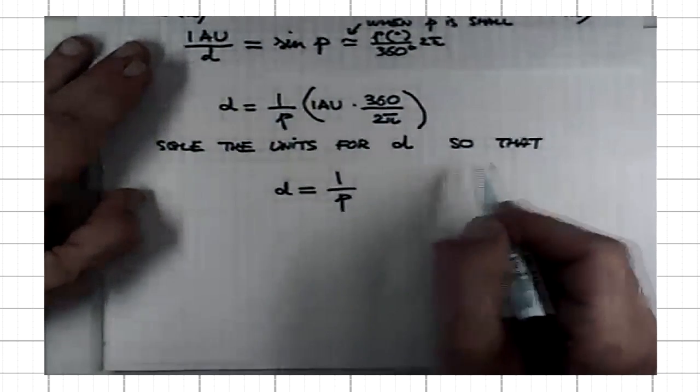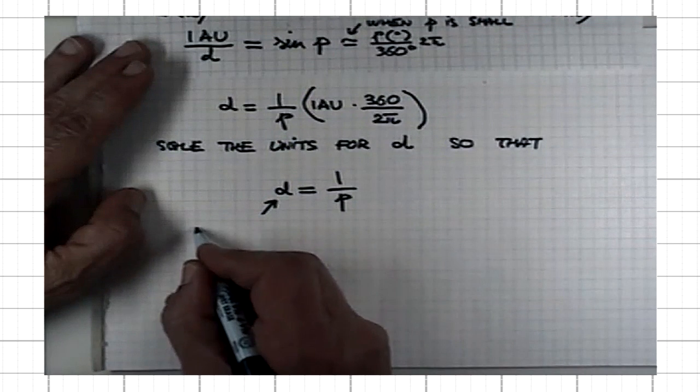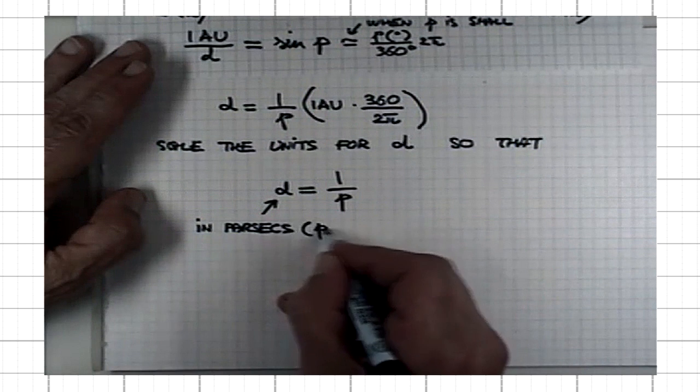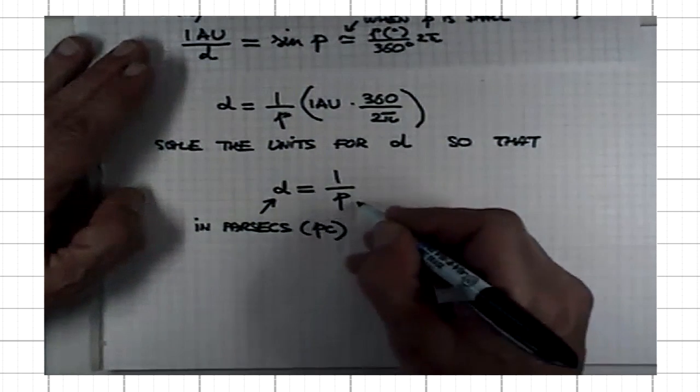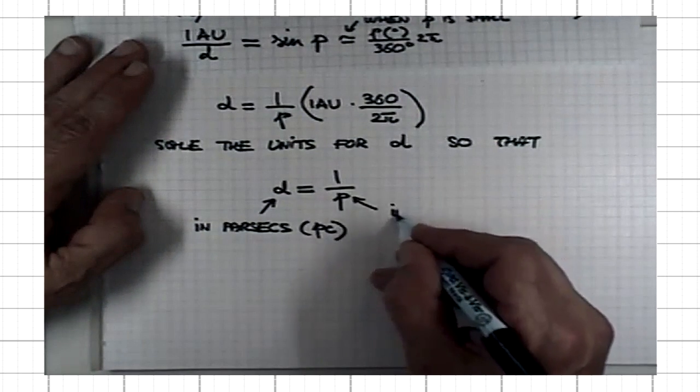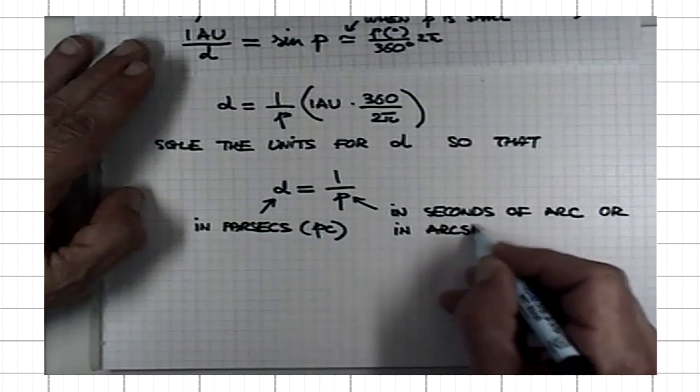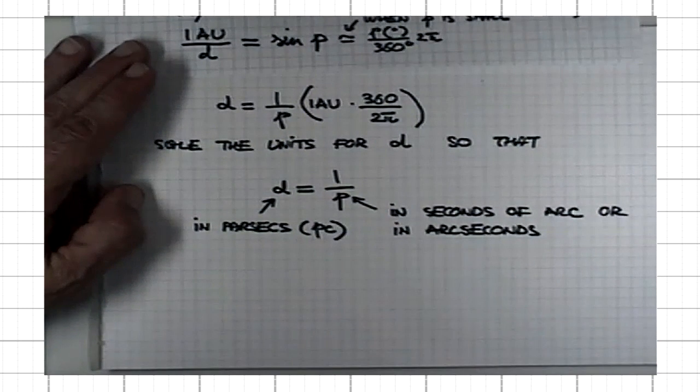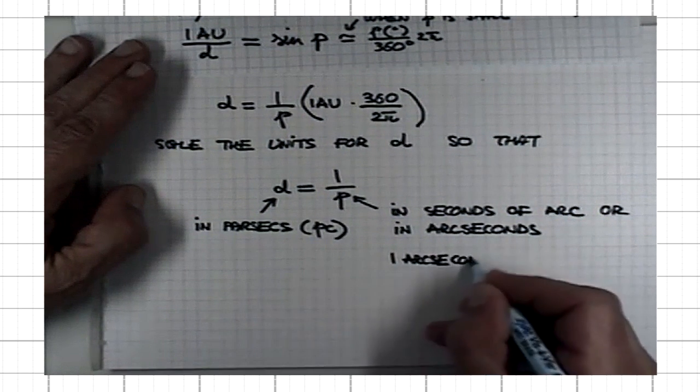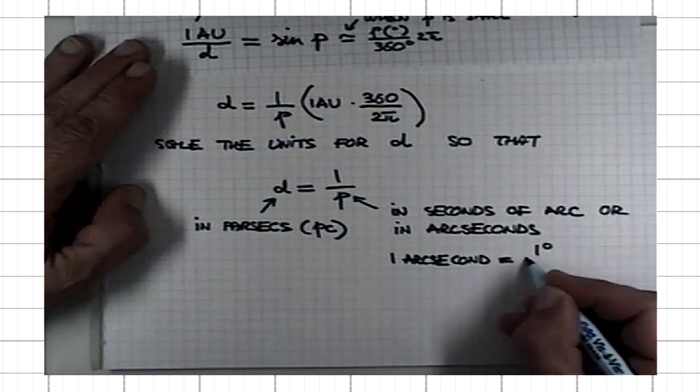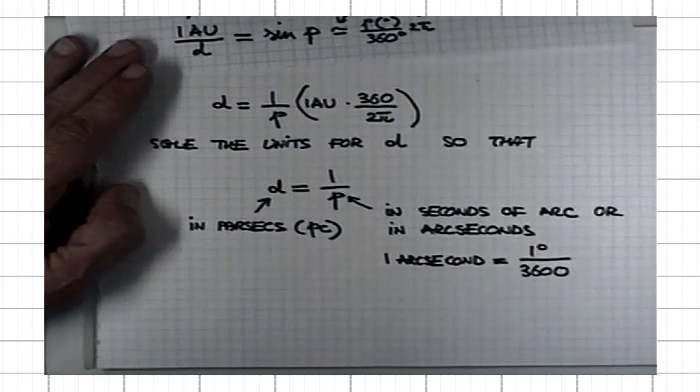The units that then I express the distance is so-called parsecs. The shorthand for parsec is PC. Here the parallax angle is given in seconds of arc. Even for nearby stars, 1 arcsec is equal to a degree divided by 3,600. It's indeed a very small angle.